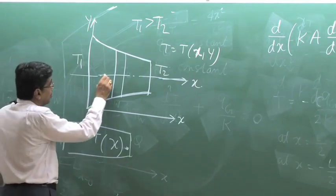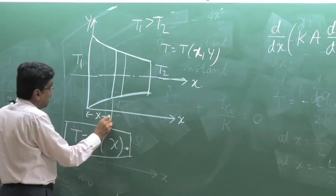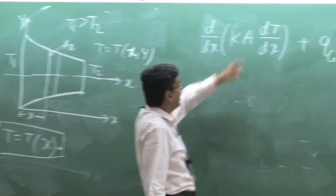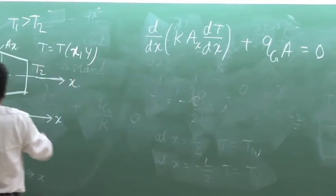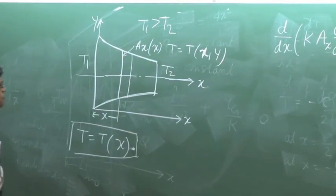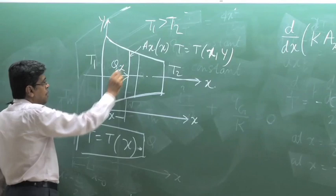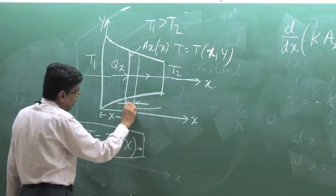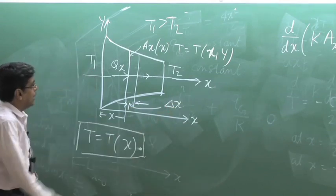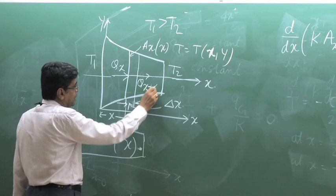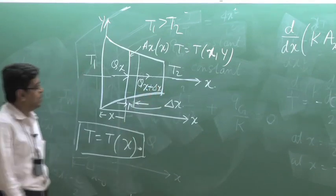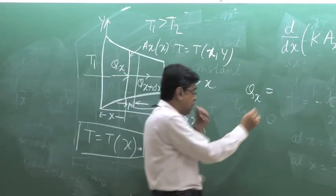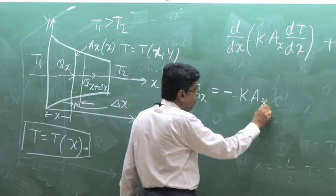Taking a small element at a distance x where the area is A(x) — I write A(x) to indicate it is a function of x and is changing. The heat flux at that location is Q_x, and we consider an element of thickness δx. The heat going out at x + δx is Q_{x+δx}. By Fourier's heat conduction equation at section x, Q_x equals minus K·A(x)·dT/dx, where T is either a cross-sectionally uniform or cross-sectionally averaged temperature.